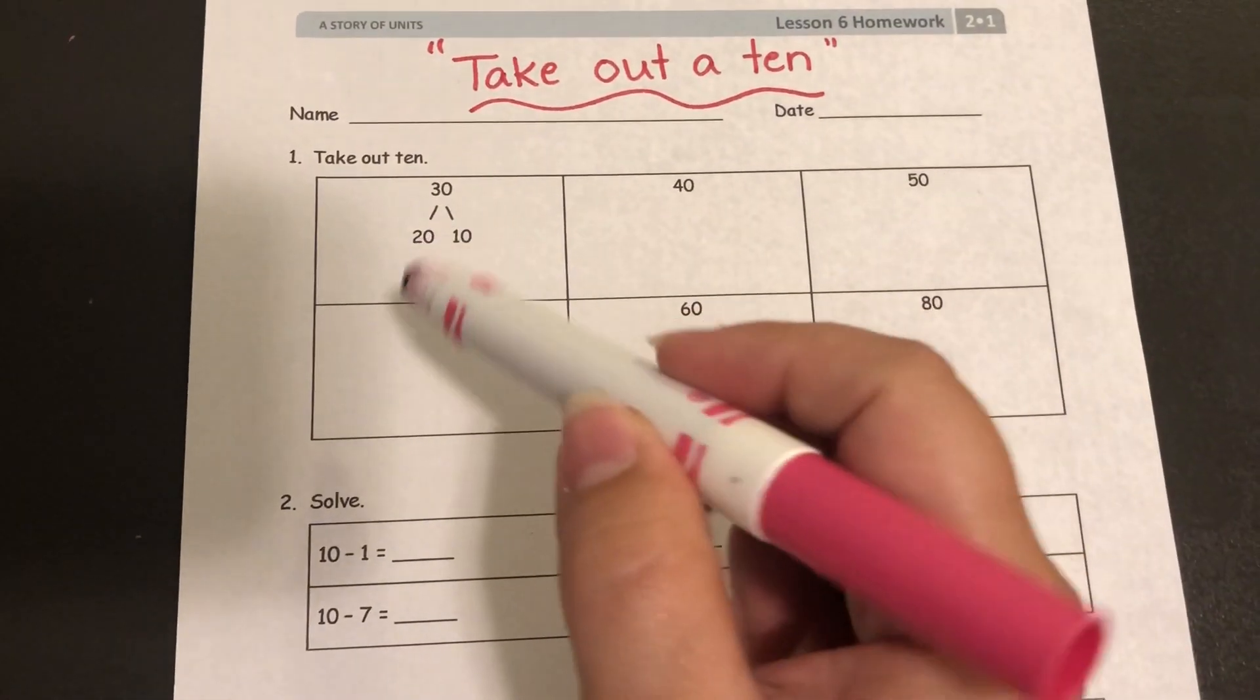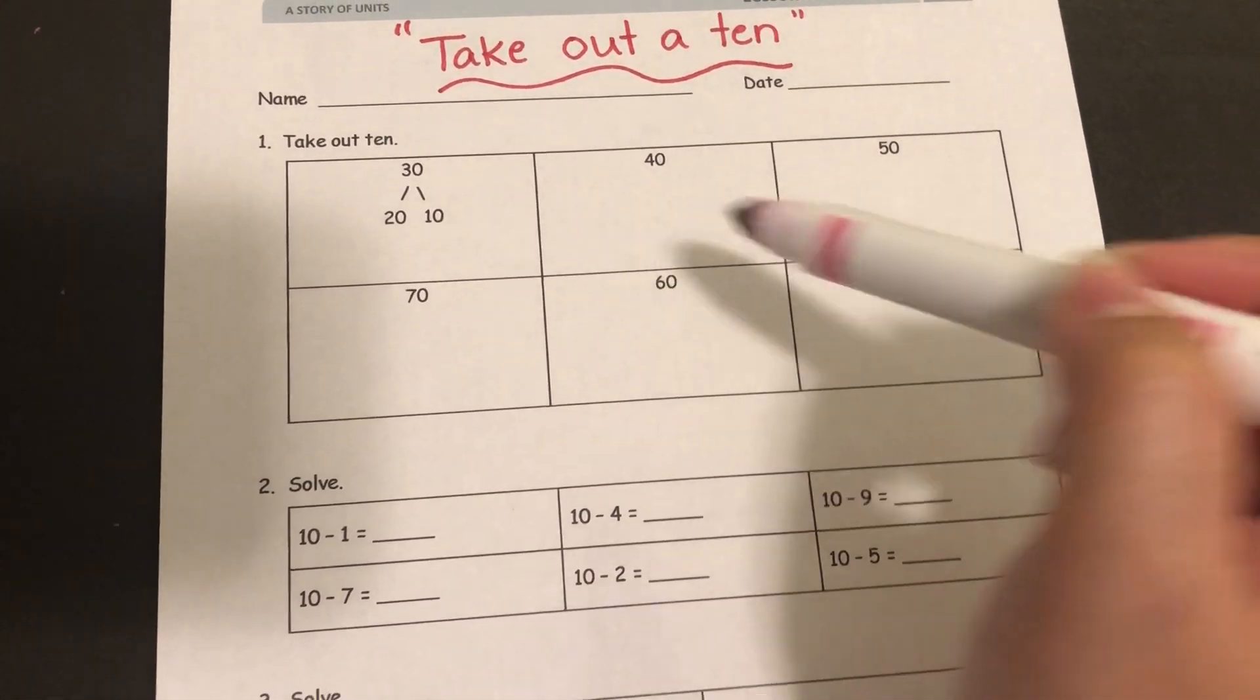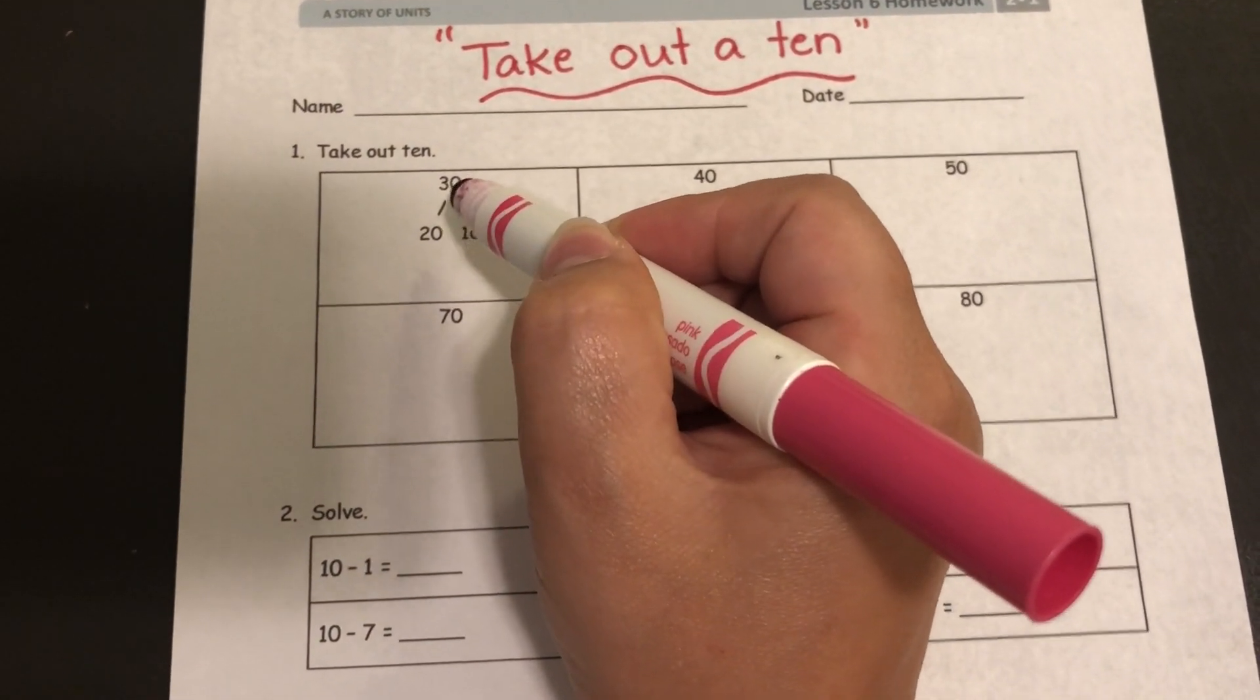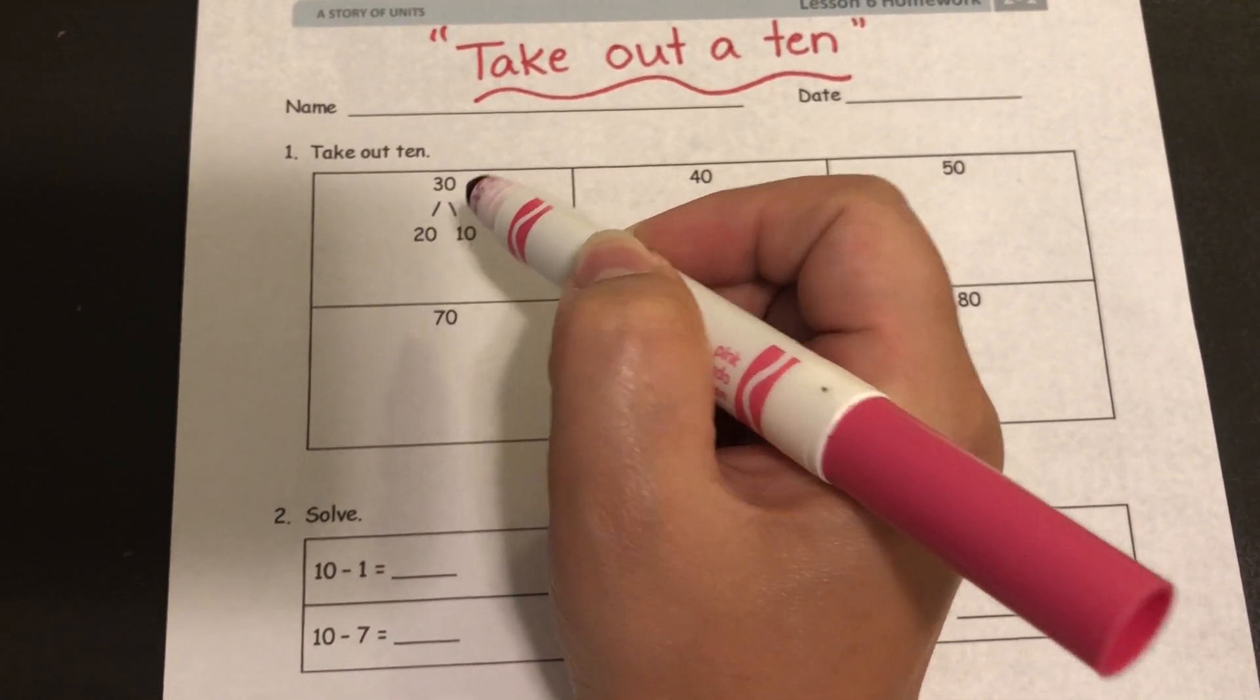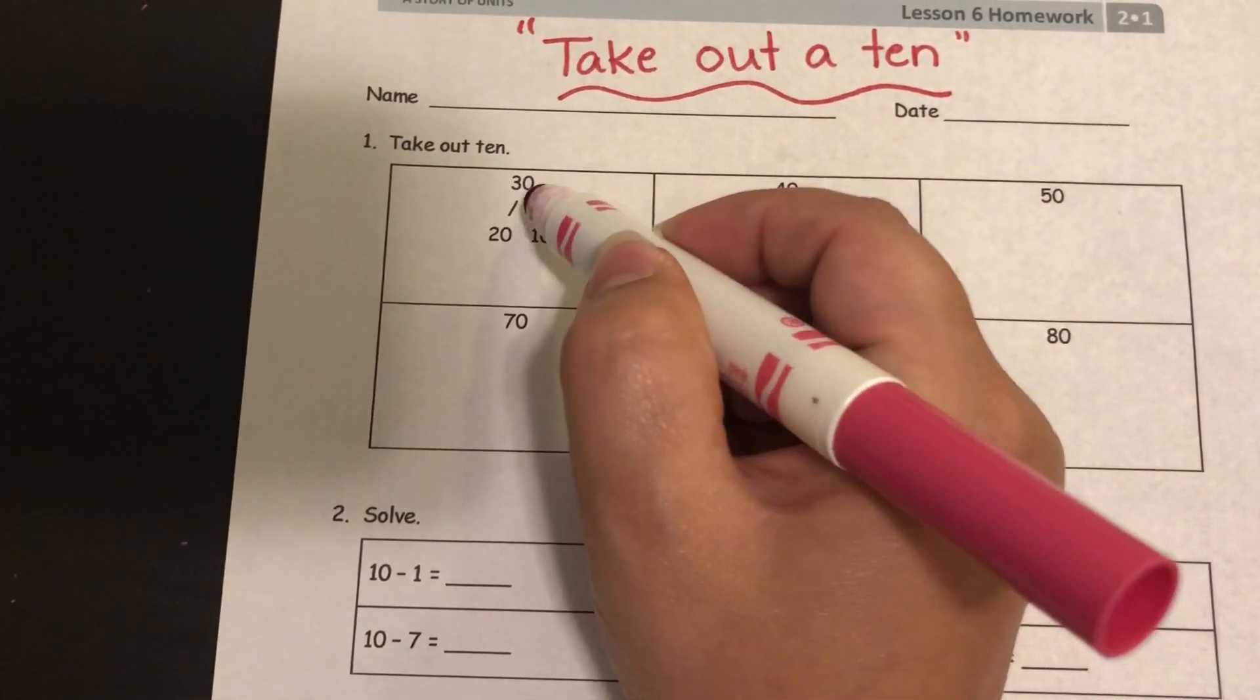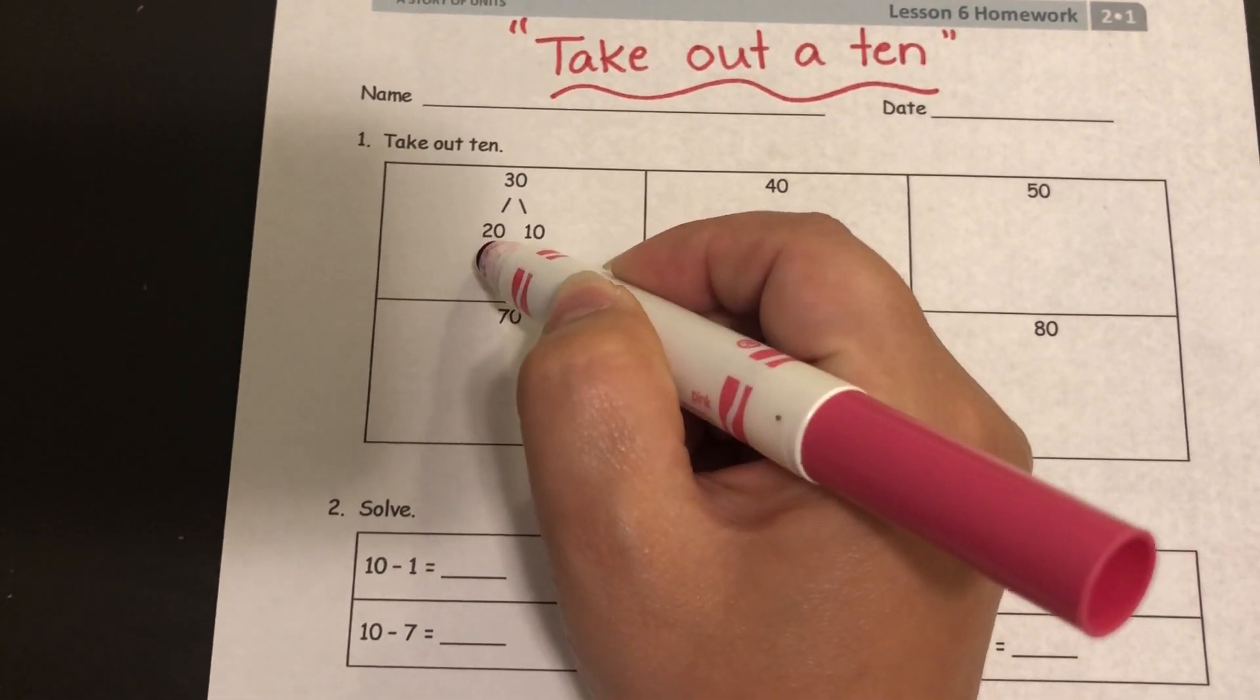When you look at your homework it has a little bit of a warmup where all they want you to do is look at this whole number and split it up into two parts where one of the parts is a ten. So they've done this one for you. They've decomposed a 30 into a 10 and a 20.